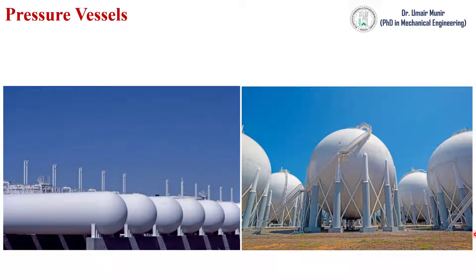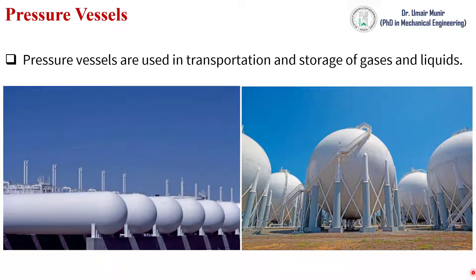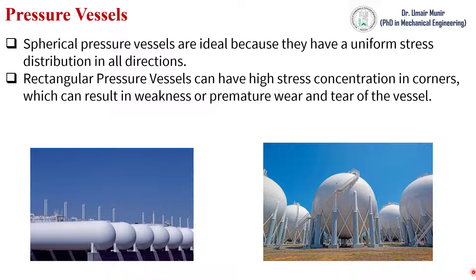In this video we will find out the hoop stress and longitudinal stress in pressure vessels. Pressure vessels are used in transportation and storage of gases and liquids. There are two shapes of pressure vessels commonly used in industry. Spherical pressure vessels are ideal because they have a uniform stress distribution in all directions. Rectangular pressure vessels can have high stress concentration in corners, which can result in weakness or premature wear and tear, so spherical pressure vessels are more safe because of the uniform stress distribution.